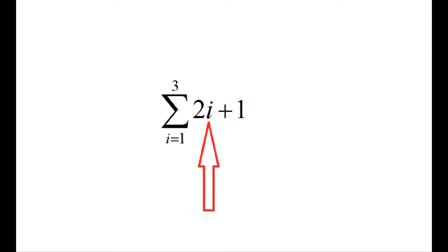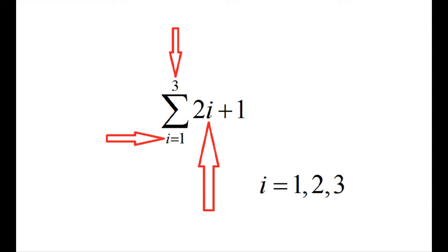This is your counting mechanism. It goes from 1 to 3 in this particular problem. I know it starts from 1 because at the bottom of the sigma it tells me, and I know it stops at 3 because at the top of the sigma it tells me. So when you look at this problem, you know that i is first 1, then 2, then 3.